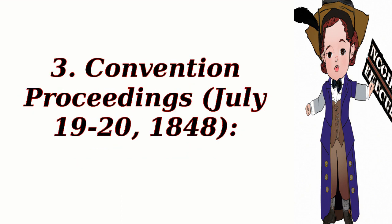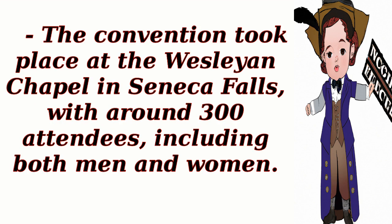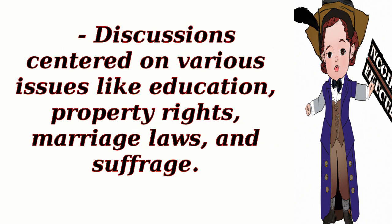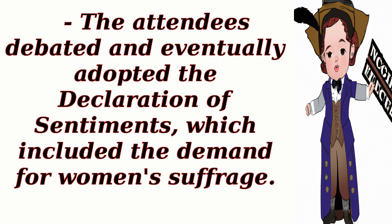3. Convention Proceedings, July 19–20, 1848. The convention took place at the Wesleyan Chapel in Seneca Falls, with around 300 attendees, including both men and women. Stanton opened the convention with a powerful speech, highlighting the need for women's rights and suffrage. Discussions centered on various issues like education, property rights, marriage laws, and suffrage. The attendees debated and eventually adopted the Declaration of Sentiments, which included the demand for women's suffrage.